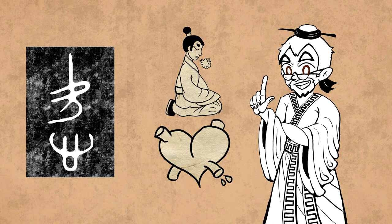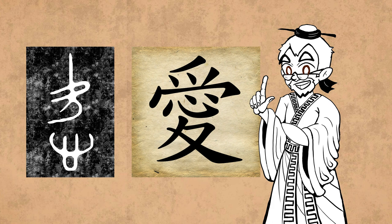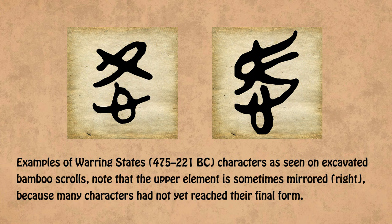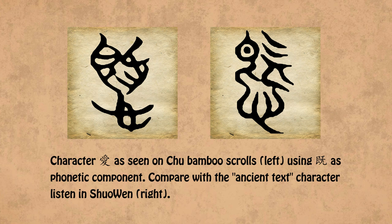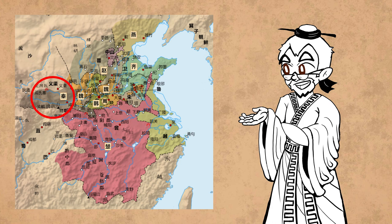We've now established the origins of the character love. But this early glyph looks nothing like the modern character, so how did we get from one state of affairs to the other? Well, the ancient glyph remained in use throughout the Spring and Autumn period. Of course, the Chu still had to be a little extra and use a modified form, using the homophone Qi as a phonetic. Never change, Chu. Never change.